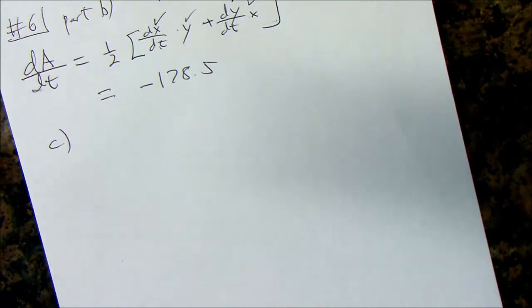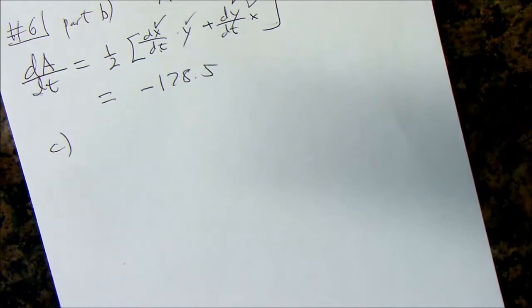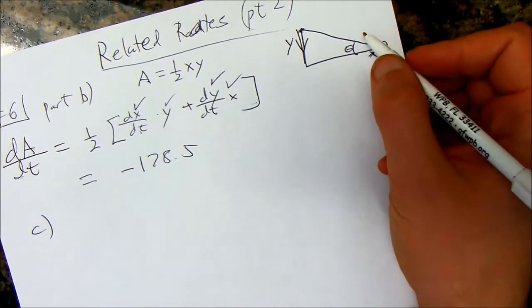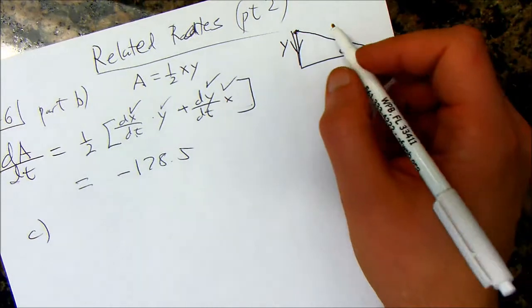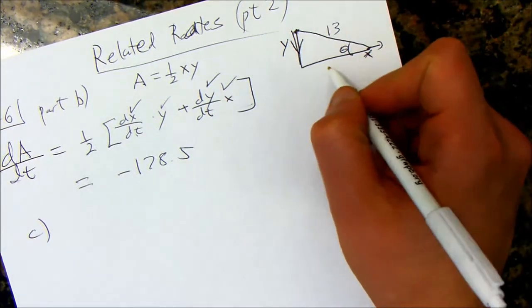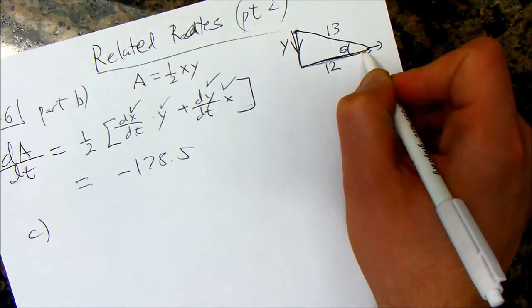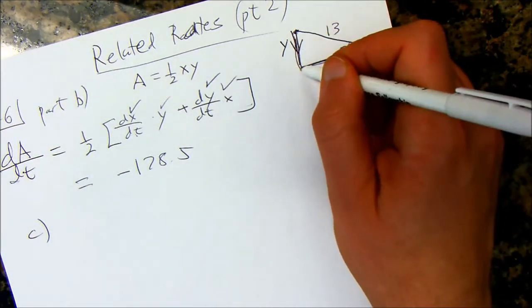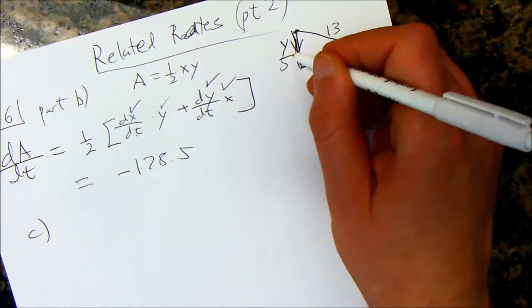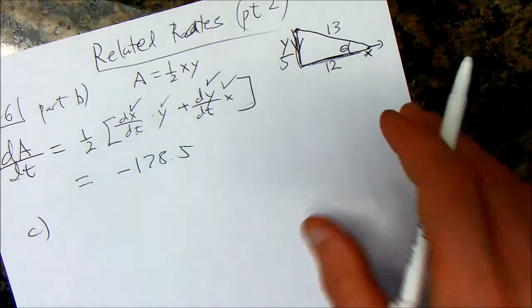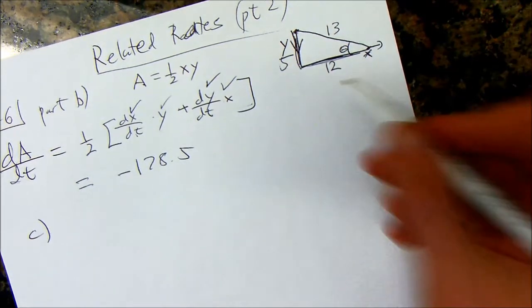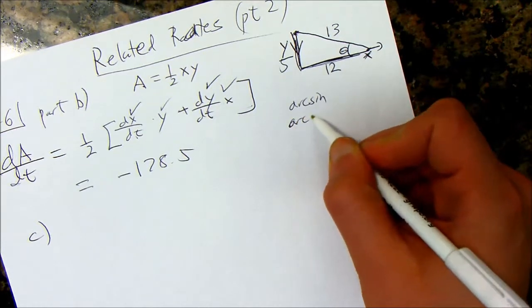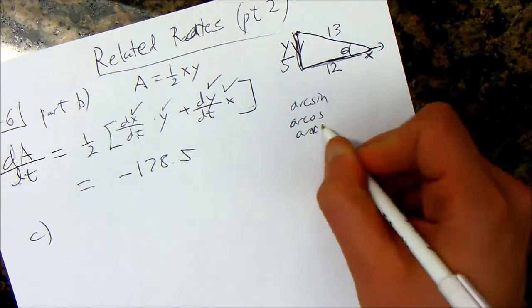All right, part C. So, it's asking you to figure out the angle, or the rate at which the angle is changing. So, if you're solving for an angle out of a triangle, I mean in this class, you're basically going to be using an arc function, or an inverse trig function. But you want to be clever about which one you pick.